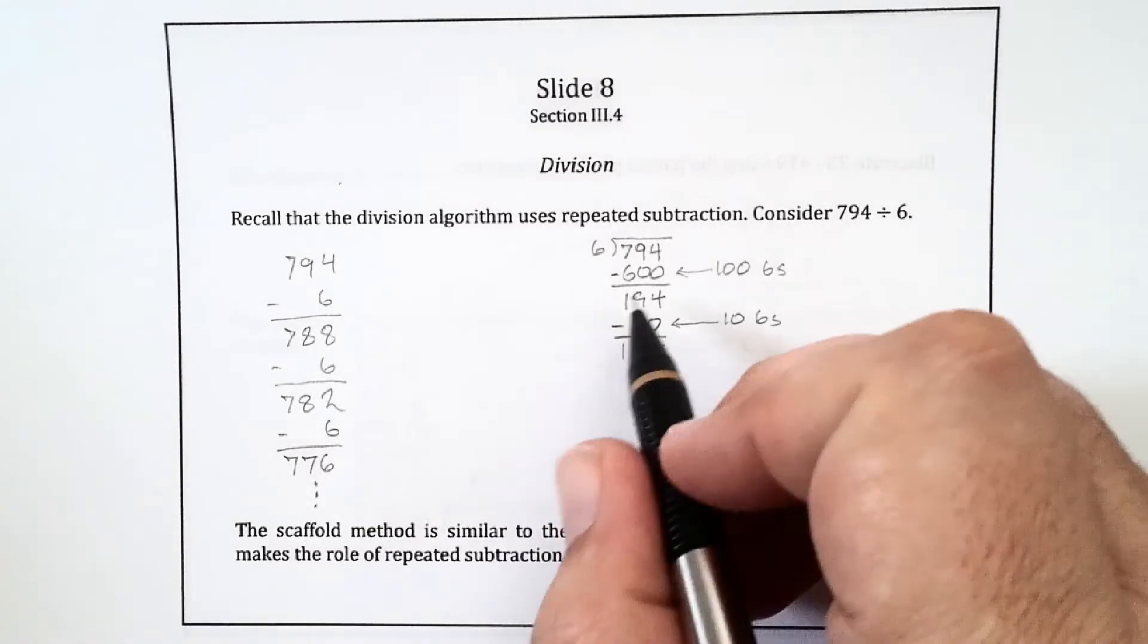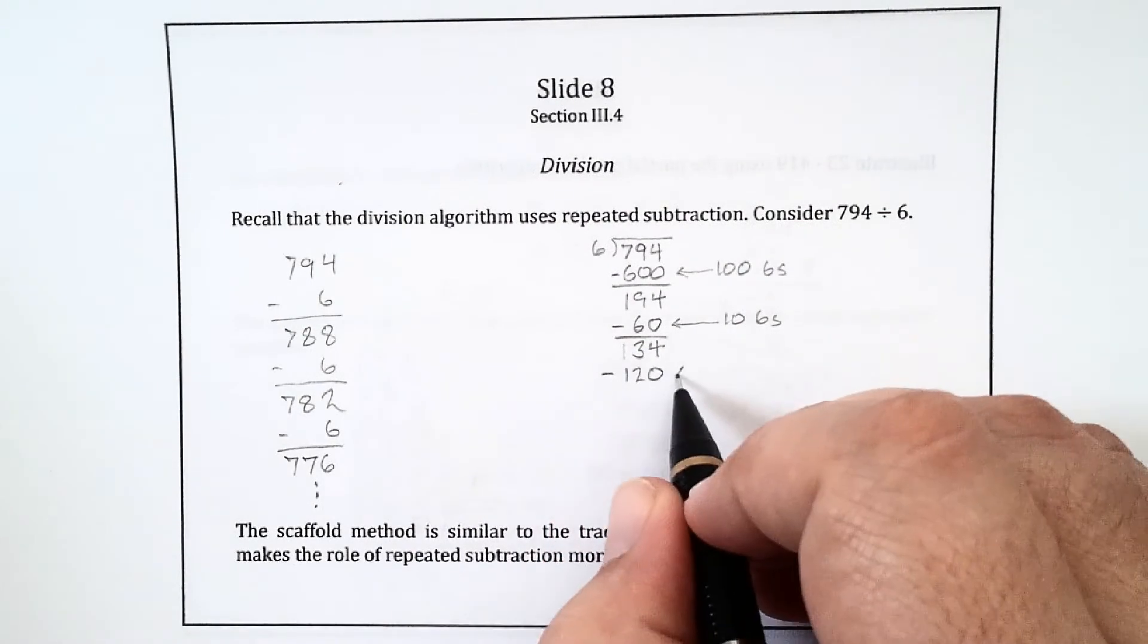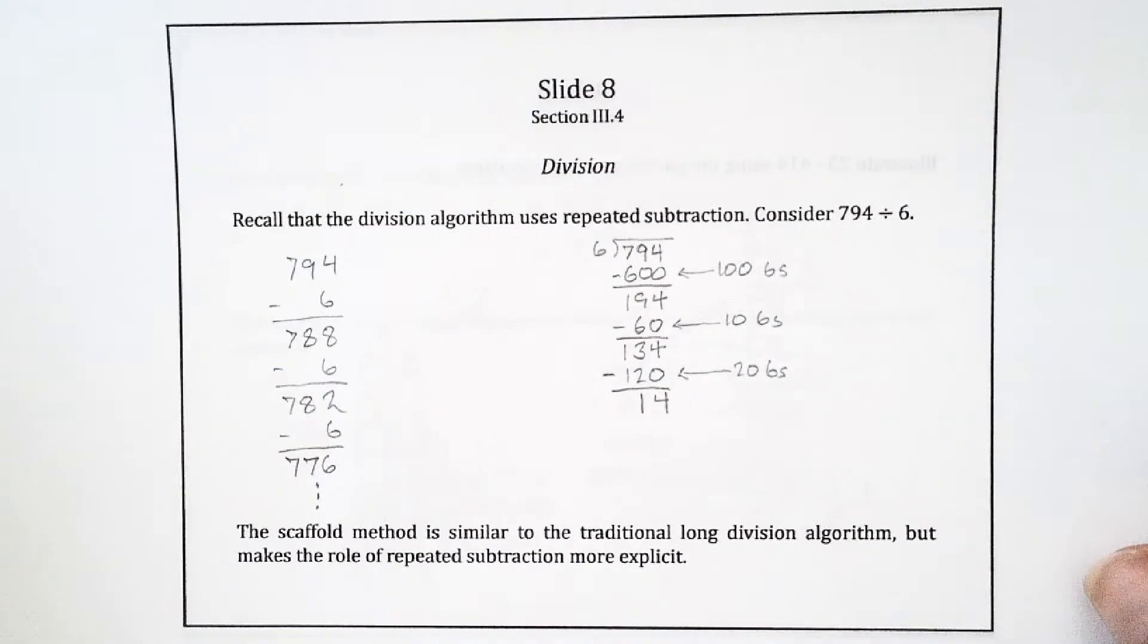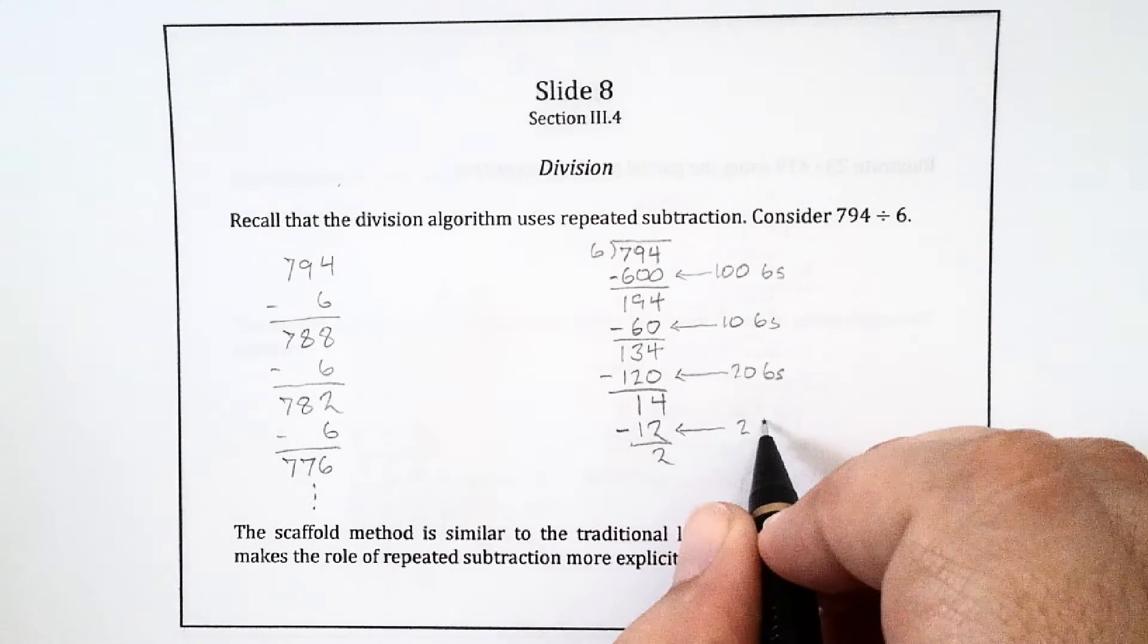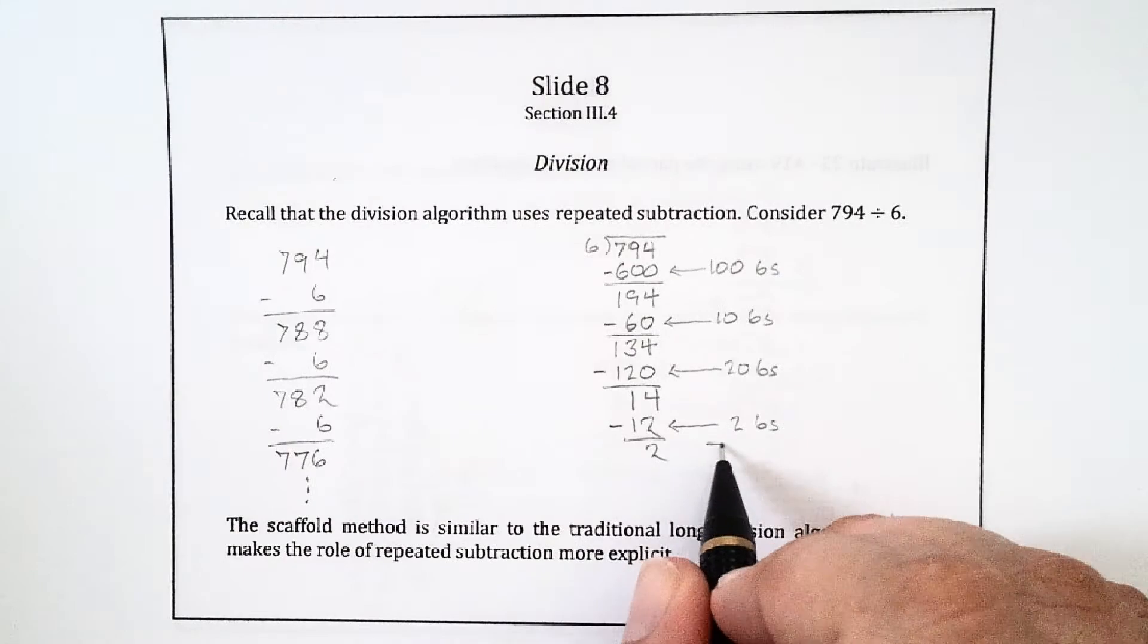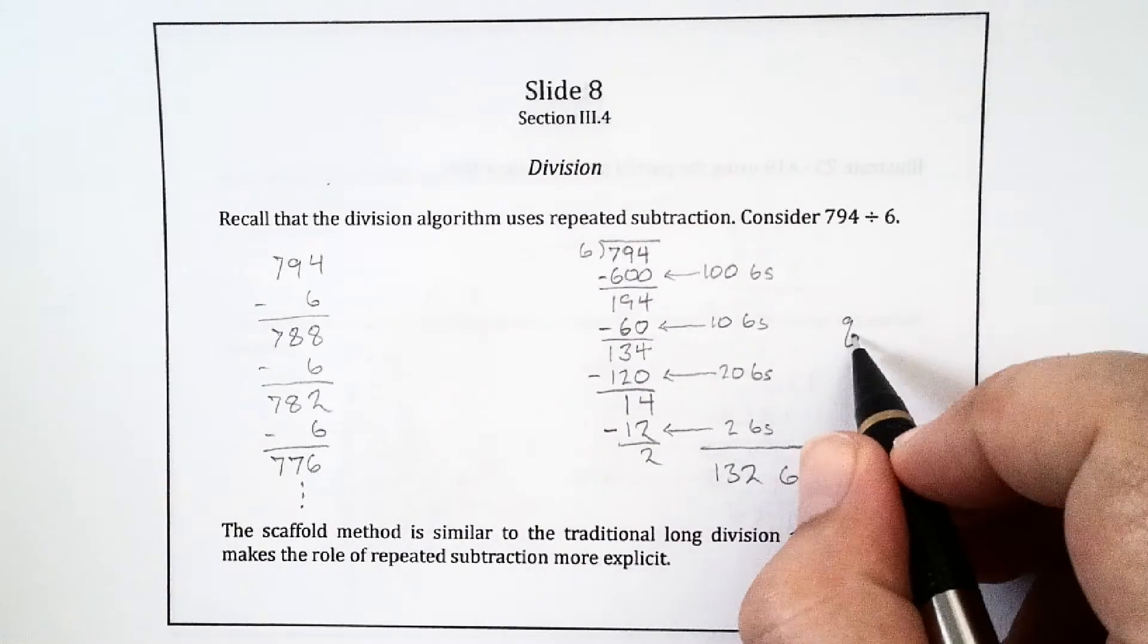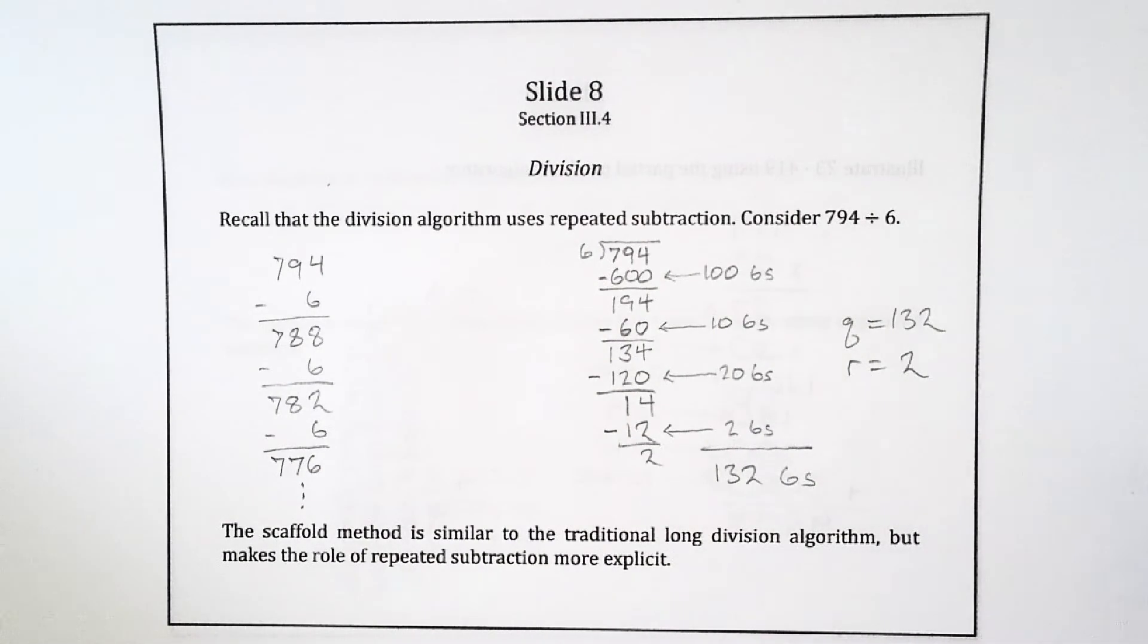Now that we kind of have a handle on the size of the numbers, let's take away 20 6s all at once. 20 6s, that's 120, which leaves me with 14. Now let's take away 2 6s, that's 12, which leaves me with 2. I can't take away anymore because I have a number that's less than 6. So I know that that's the place where I stopped. If I add up all the 6s I took away, that was 132 6s. So the quotient here is 132, the remainder is what was left over, which is 2. The scaffold method is similar to the traditional long division algorithm, but it makes the role of repeated subtraction more explicit.